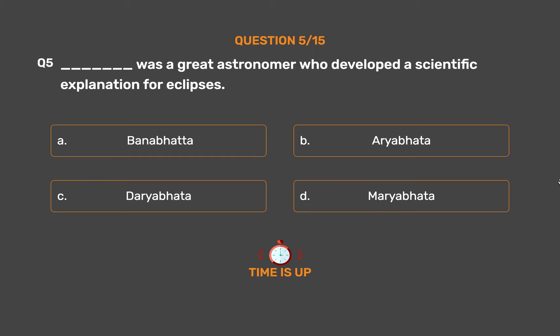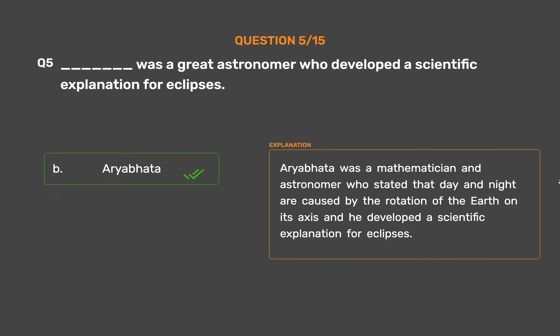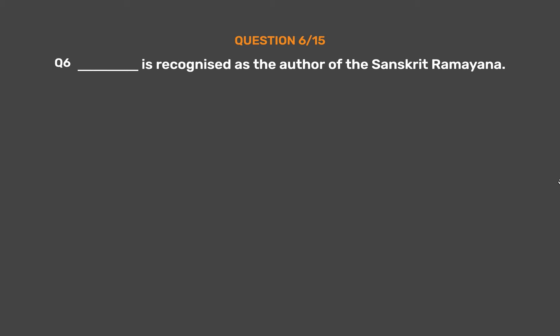The correct answer is Option B: Aryabhata. Aryabhata was a mathematician and astronomer who stated that day and night are caused by the rotation of the earth on its axis, and he developed a scientific explanation for eclipses.